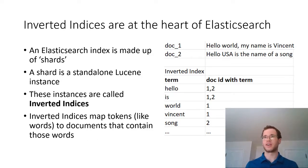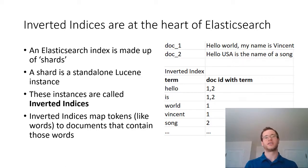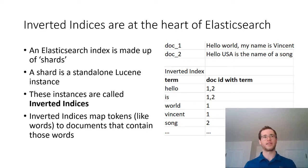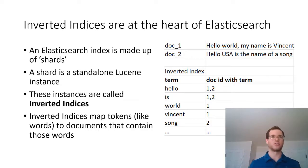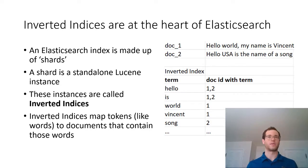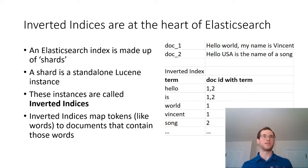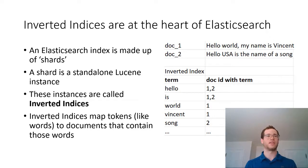If I did a query for the word 'song,' I'm going to see that only document 2 has it, so I should only return document 2. Inverted indices get much more nuanced, however, because in addition to caring about whether a particular word is present inside a document, we also care about the position of that word relative to other words in order to determine how relevant a document is to a query. But at a high level, this is what inverted indices let us do, and this is what lies at the heart of Elasticsearch and how it does full-text analysis.